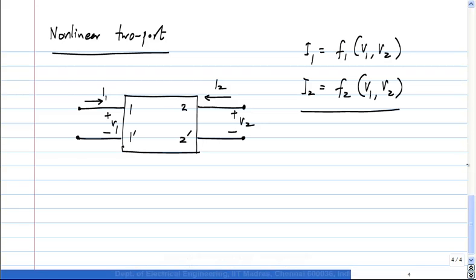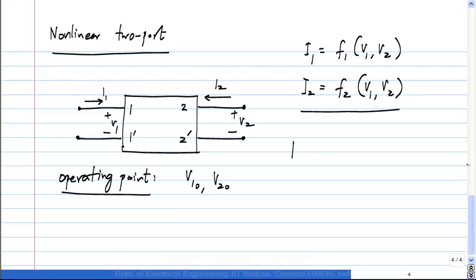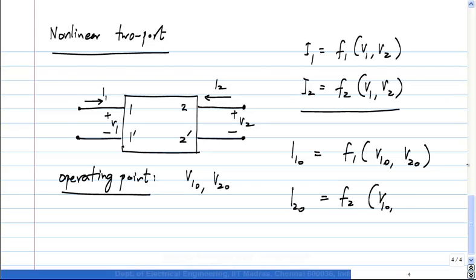I will have V1, I1, V2, and I2. In general, I1 is some function f1 of V1 and V2, and I2 is some other function f2 of V1 and V2. Now, how do we normally analyze this? We know that this kind of representation is not very useful because we cannot analyze non-linear equations in general. So what did we do earlier? We set up some operating point and analyze around that — basically we approximate it and say that it is a linear system for small excursions around the operating point.